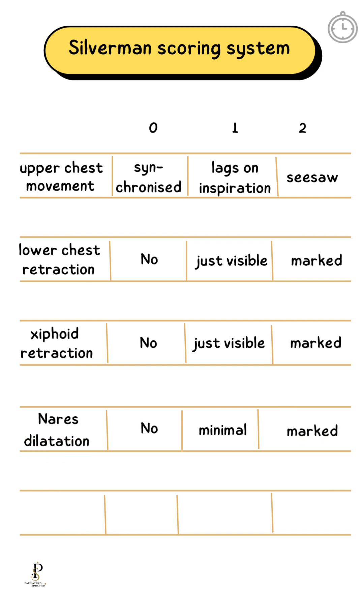Nares dilatation or nasal flaring: no nasal flaring is grade 0; minimal is grade 1; marked flaring or dilatation is grade 2.